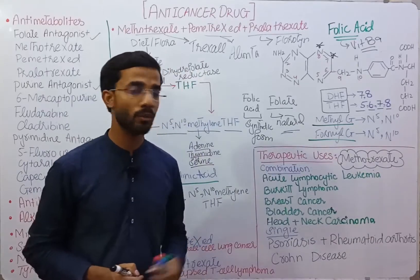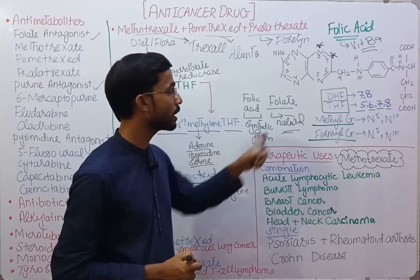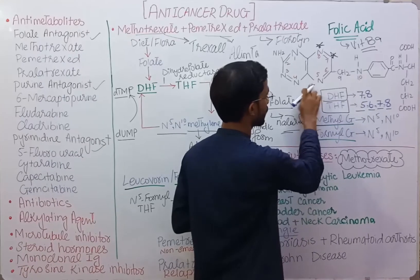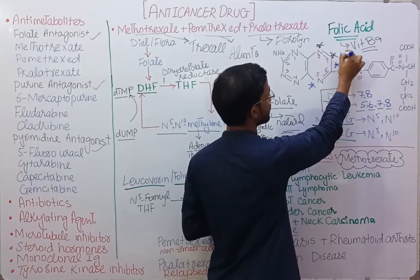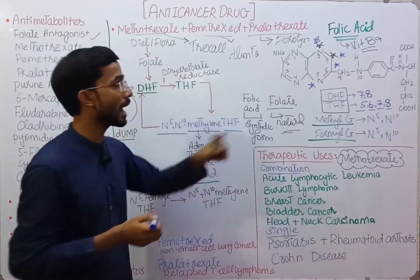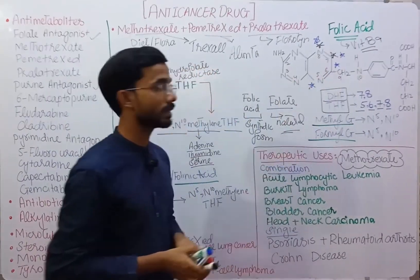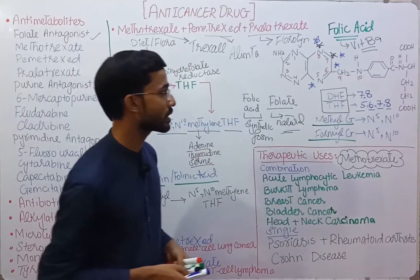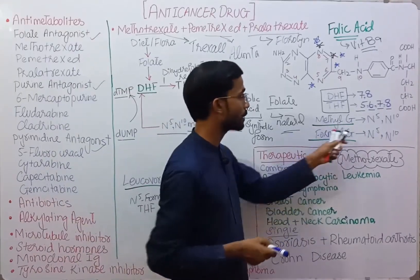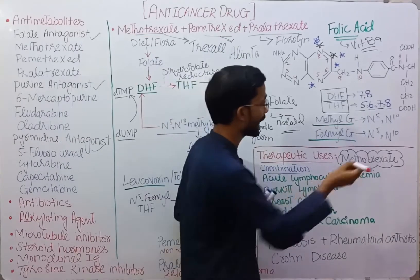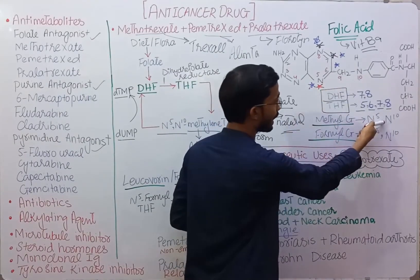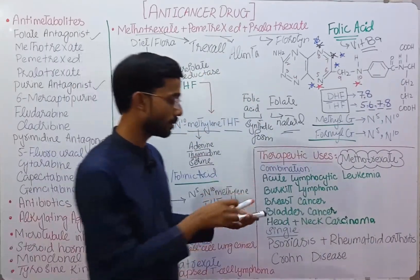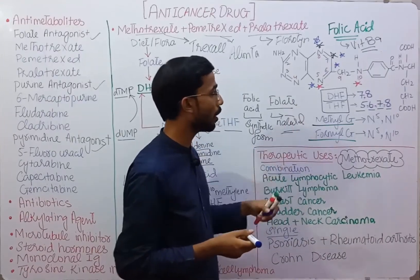Tetrahydrofolate means 'tetra' equals 4 and 'hydro' means hydrogen — hydrogens are added at positions 5, 6, 7, and 8 to form tetrahydrofolate. There are also other modifications where a methyl group or formyl group can be added at position N5 or N10.